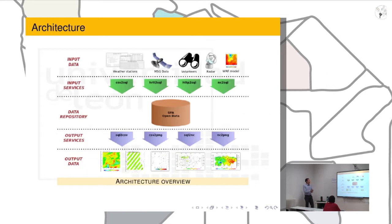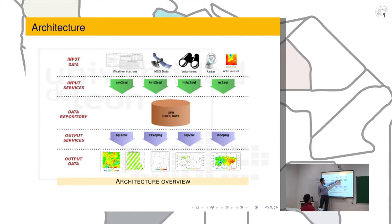The open data has a five-layer architecture. The first one has to do with the input data, the different kinds of information we can introduce in the open data, such as weather stations, satellite image information, volunteers observations, meteorological radar information, models, etc. All this information can be stored in the open data using some web services that are in the second layer.